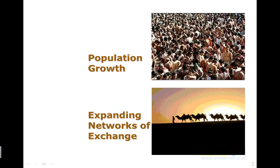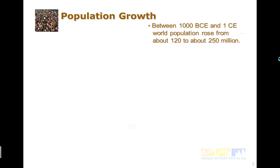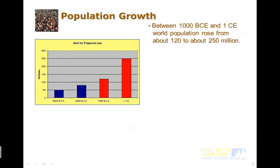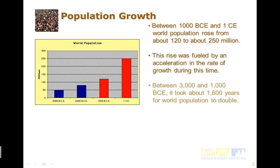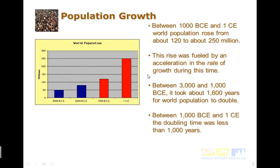We'll be looking at population growth and expanding networks of exchange. We've learned a little bit about population growth so far, but in this era it continues to grow. Between 1000 BCE and 1 CE, the world population rose from about 120 to 250 million — it more than doubled in those 1000 years. Between 3000 and 1000 BCE it took about 1600 years for world population to double, but between 1000 and 1 CE the doubling time was less than a thousand years.